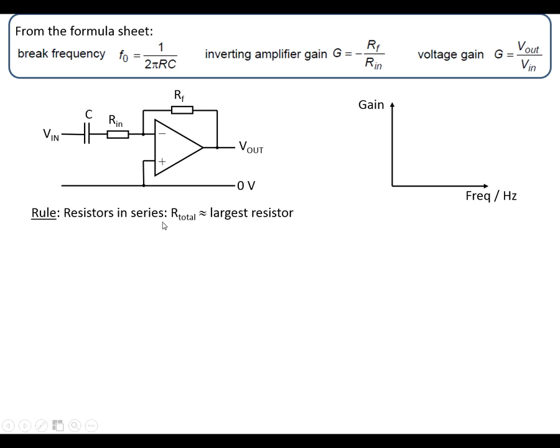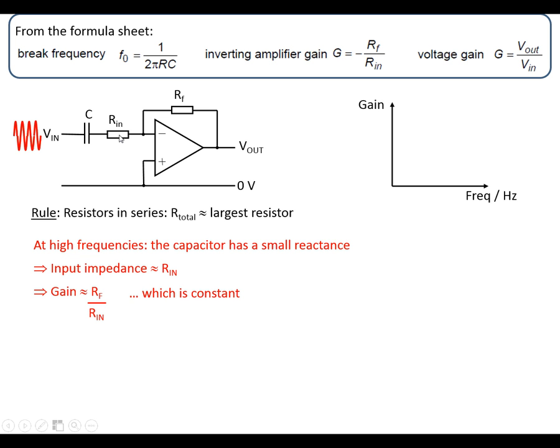So the rule: we've got resistors in series. If one of the resistors is significantly larger than the other one, then the total resistance is approximately the larger resistance of the two. At high frequencies, there's a small reactance for the capacitor. Remember that from the passive filters, which means that the input impedance is effectively just the resistor, which means that the gain is going to be RF over Rin, which is a constant value.